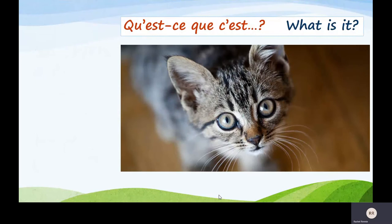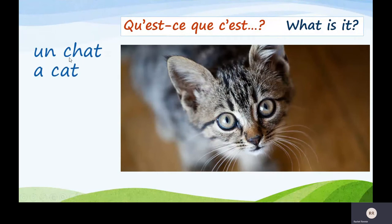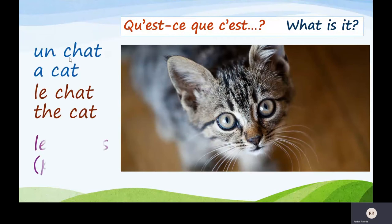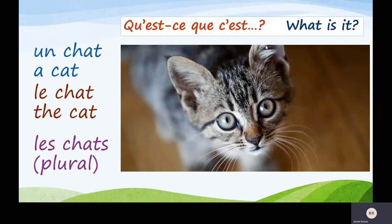Look at the little cat! Un chat. Remember, C and H in English we say 'ch,' but in French it's a 'sh' sound. So we pronounce this 'cha' — un chat. Le chat. Les chats. Qu'est-ce que c'est? What is it? C'est un chat. It's a cat.